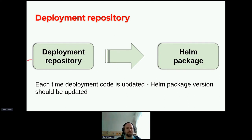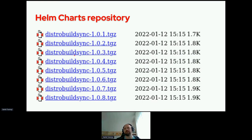Deployment repository: it's similar to the source code repository. On a merge request, GitLab builds a Helm package and sends it to the Helm chart repository. The Helm chart repository could be an FTP server, for example, where packages are stored. And you need to remember that each time deployment code is updated, the Helm package version should be updated also. As you see in this example, it's like a normal FTP server, and you have each version of the Helm package there.